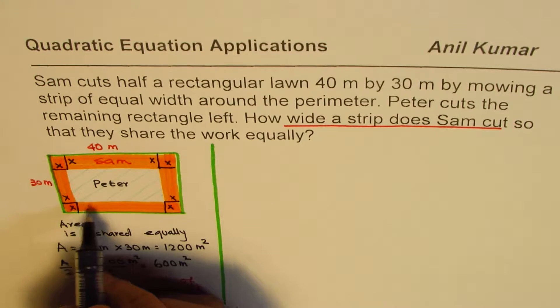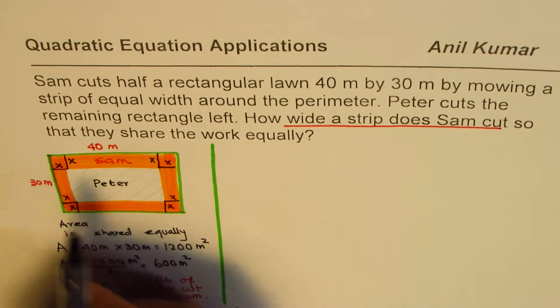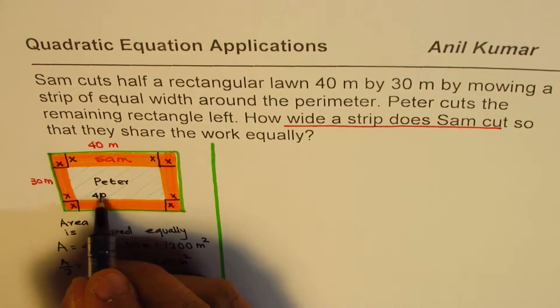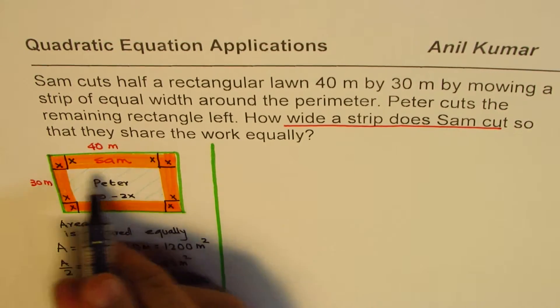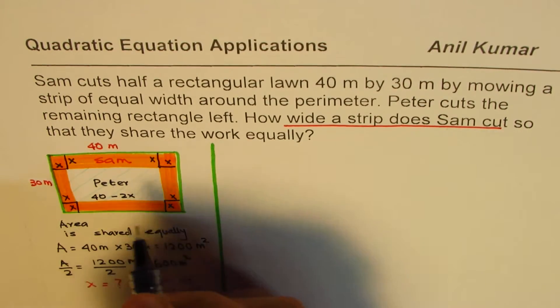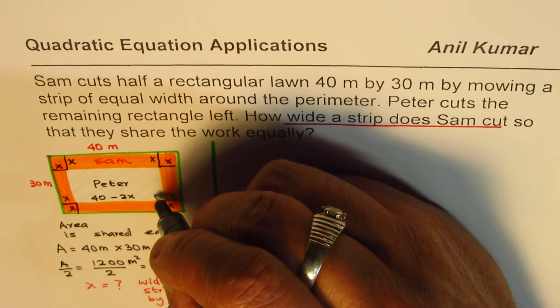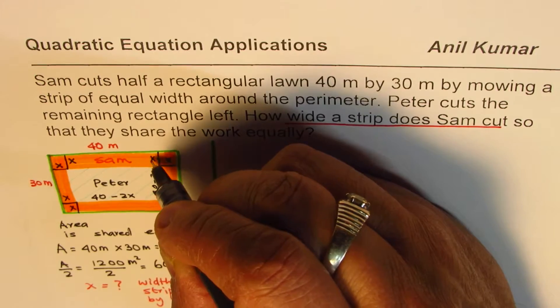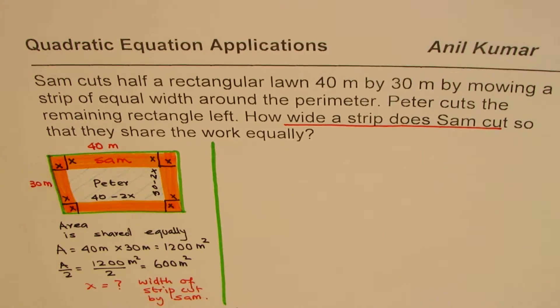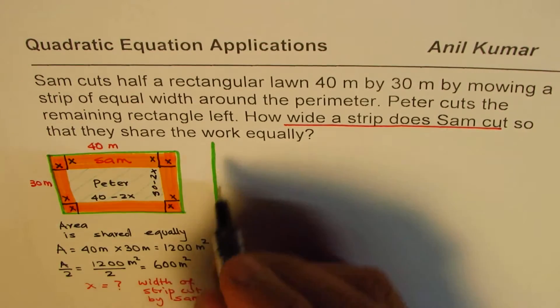X and x, I hope it makes sense. Peter is doing the inside rectangle. So Peter's job should be to cut an area of 40 minus 2x times 30 minus 2x.